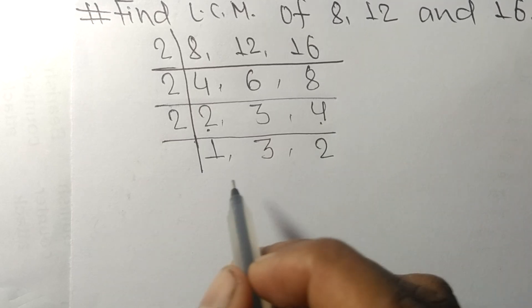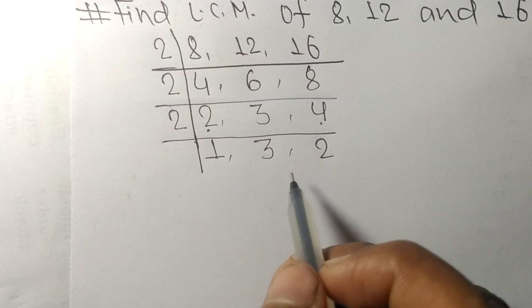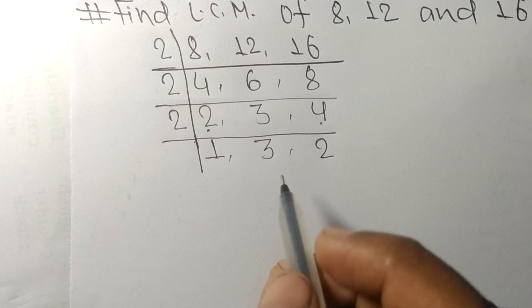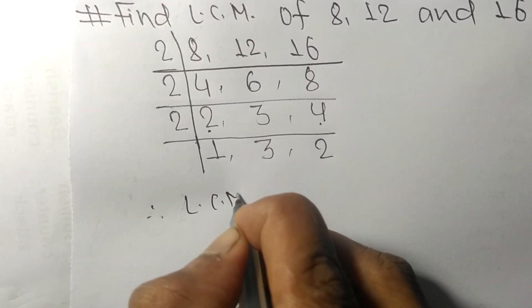Now we got 1, 3, and 2, which are not exactly divisible by the same number. Therefore, its LCM is equal to...